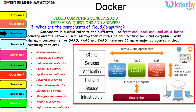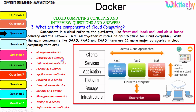Now let's talk about the components of cloud computing. Components in a cloud refer to the platforms like front-end, back-end, cloud-based delivery, and the network used. Together they form an architecture for cloud computing. The main components are Software as a Service, Platform as a Service, and Infrastructure as a Service. There are 11 major categories in cloud: storage as a service, database as a service, information as a service, process as a service, application platform, integration, security, management, testing, and infrastructure.